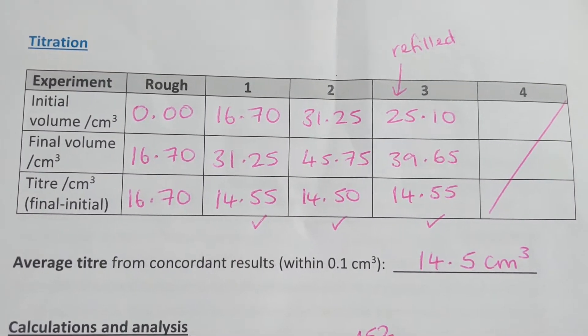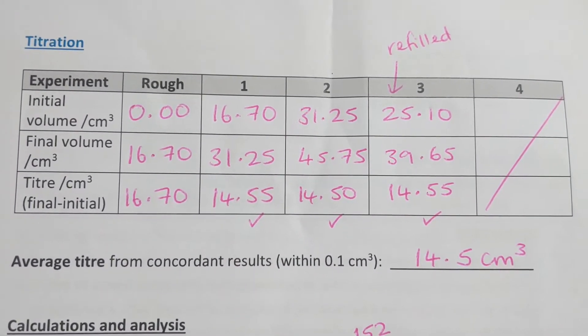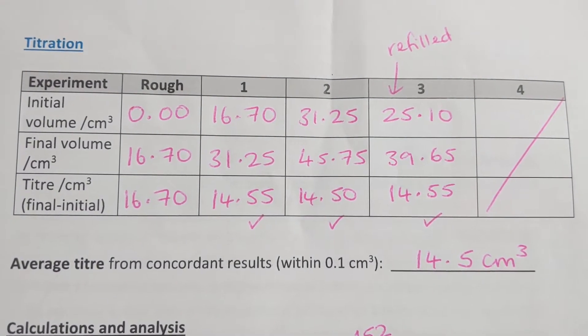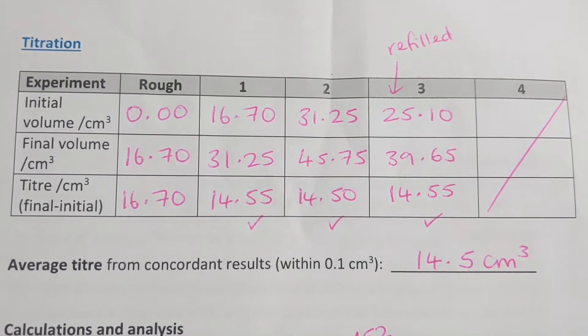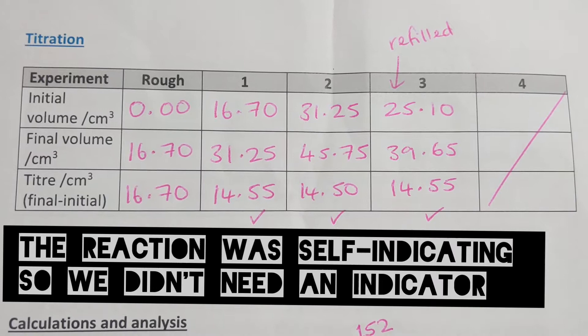We didn't need to use an indicator because the manganate solution is purple and the iron solution is colorless. The reaction is what's called self-indicating, so the endpoint was the first hint of permanent pale purple in the conical flask.